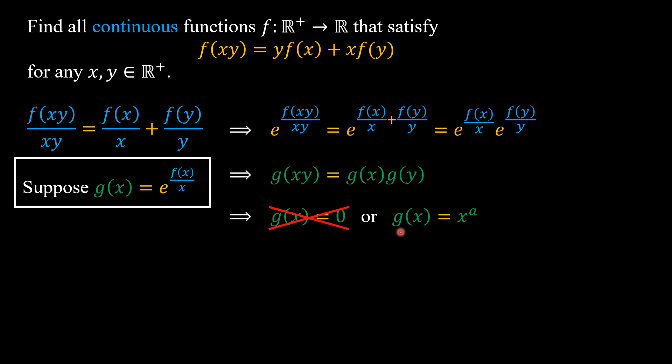By substituting the definition of g(x), so we have e to the power of f(x) over x equal to x to the power of a, which is f(x) over x equal to a times ln x, which is f(x) equal to ax times ln x.